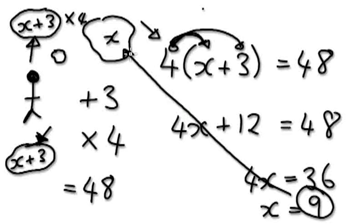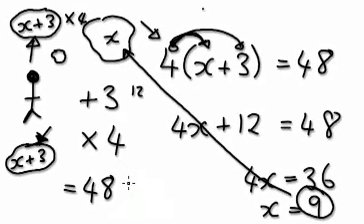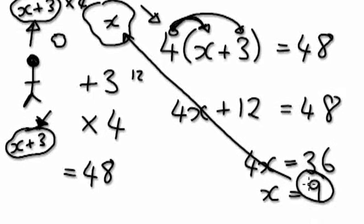So the number I was thinking of was 9. If you put 9 in here, plus 3 would be 12, and then times 4 is 48. So the number I was thinking of was 9. Do this a few times and then you'd see.